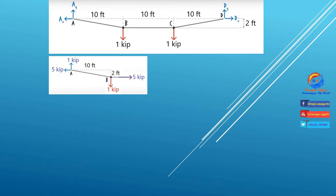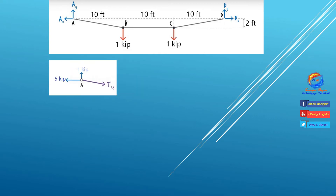After finding all 3 unknowns, the free body diagram looks like this. Now let's take joint A and make a free body diagram of joint A. There is one unknown force TAB due to cable AB. Using the Pythagorean theorem: TAB squared equals 5 squared plus 1 squared. Solving this, TAB equals 5.09 kips. So the tension force in cable AB equals 5.09 kips.